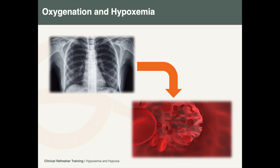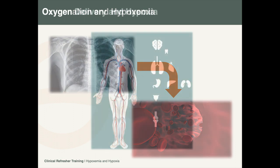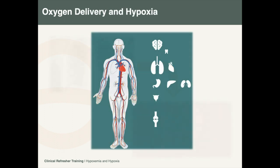Insufficient oxygenation through this process leads to hypoxemia. The rate at which oxygen is delivered to the tissues and organs of the body is called oxygen delivery. Inadequate oxygen delivery to cells, tissues, and organs is called hypoxia.